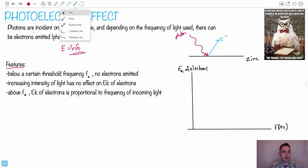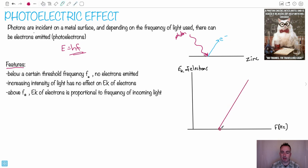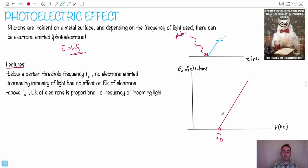The problem is, this is not what happens. There exists a threshold frequency below which nothing will happen — no electrons will be emitted. This frequency, which we'll call F-zero, is called the threshold frequency. Photons with less energy than that — with greater wavelength and lower frequency — don't produce any photoelectric effect. This was absolutely confusing, because why should there be this threshold? Shouldn't it just be linear right through the origin?